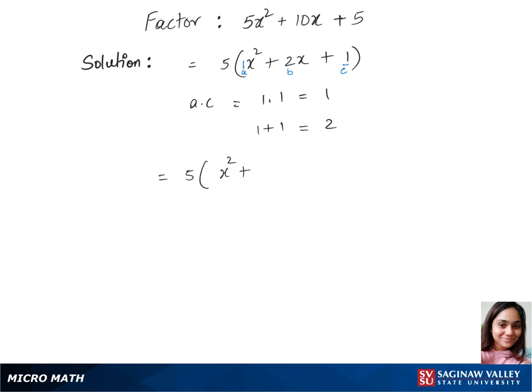x squared plus, instead of 2x we are placing x plus x, so that's 1 plus 1 plus 1. Now let's write 5 times, we'll separate first two terms and last two terms with the brackets, so that's x